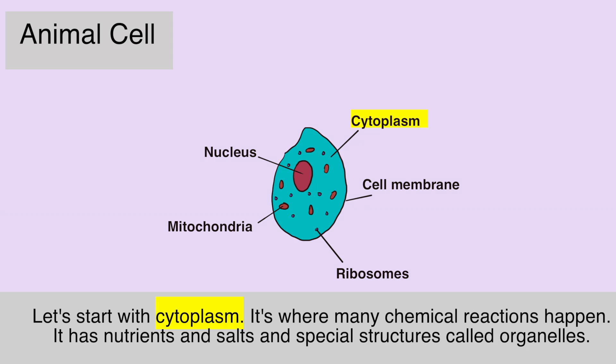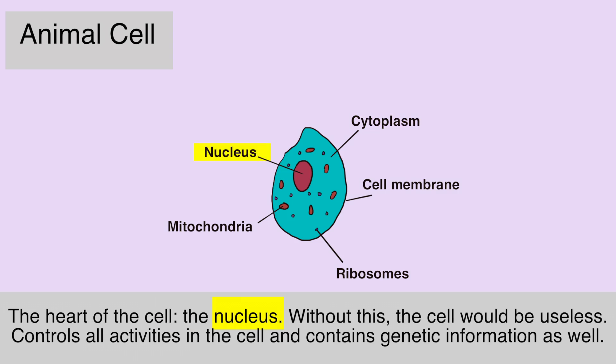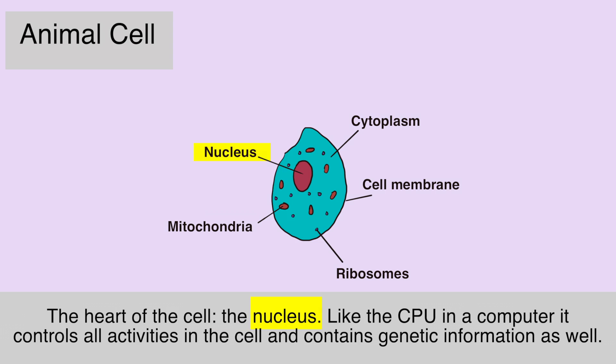The heart of the cell: the nucleus. Without this, the cell would be useless. It controls all activities in the cell and contains genetic info as well — like the CPU in a computer.